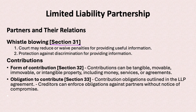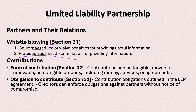Section 31 of the LLP Act covers whistleblowing. If the government finds LLP is in a problematic situation, courts can reduce and waive penalties for a person who provides information about LLP's wrongdoing. The court will protect that person from harassment — it will protect partners who provide information from being harassed by the LLP.